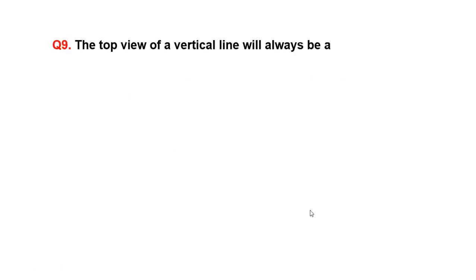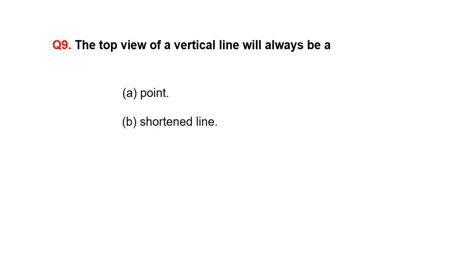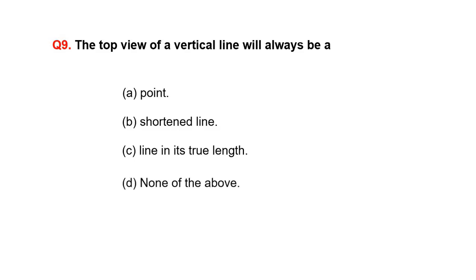The top view of a vertical line will always be: A. A point, B. A shortened line, C. A line in its true length, or D. None of the above.